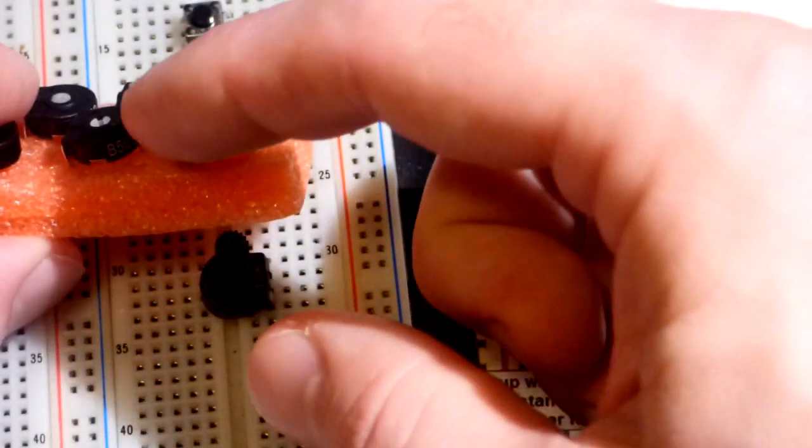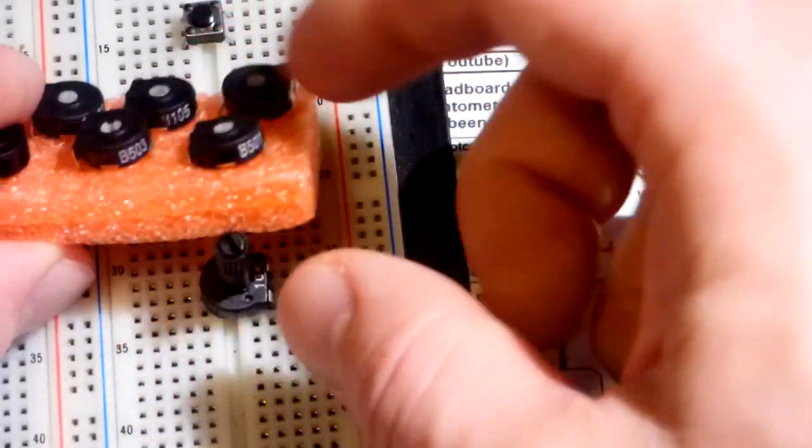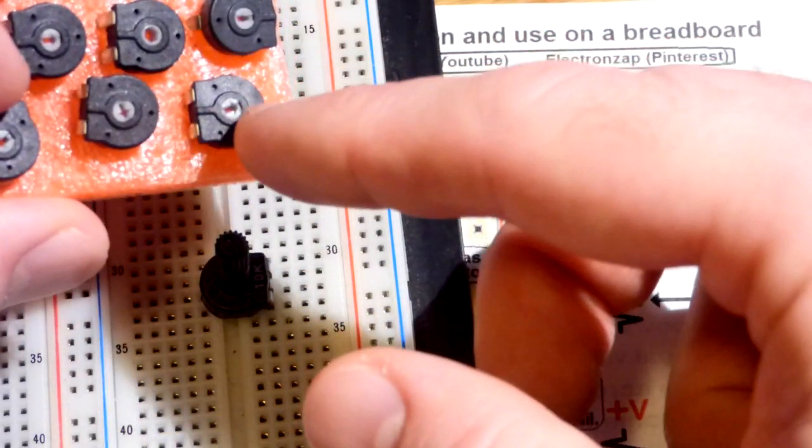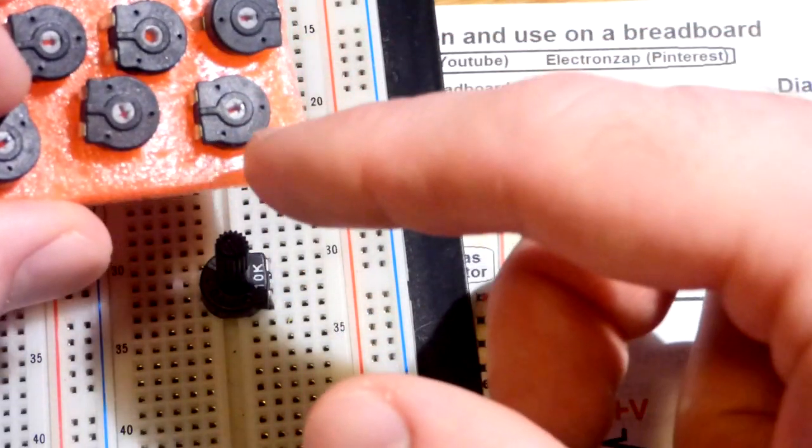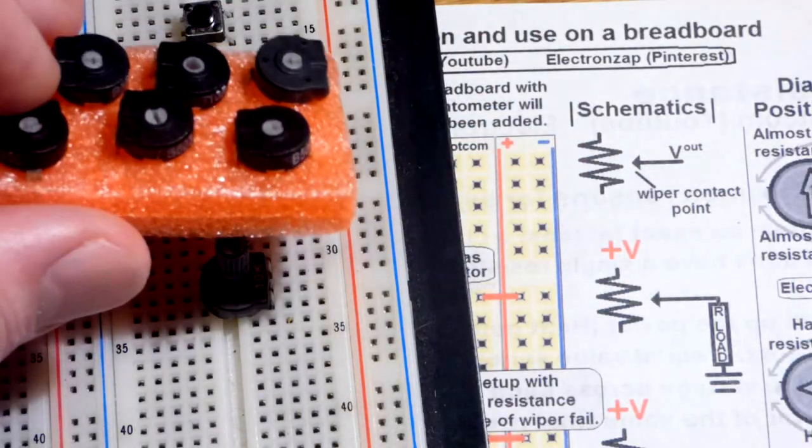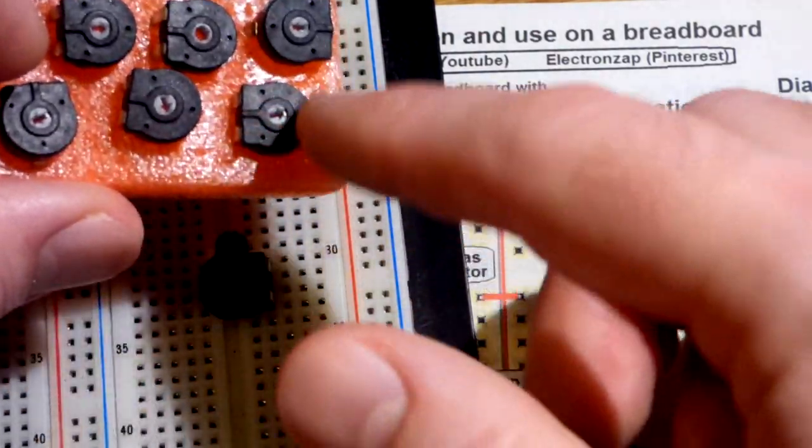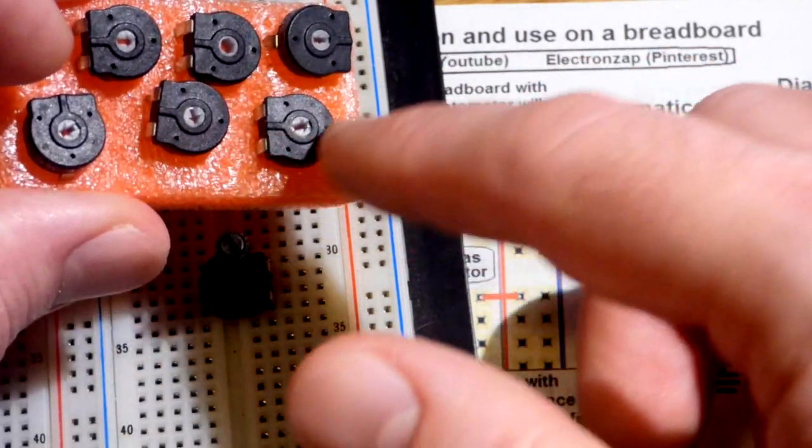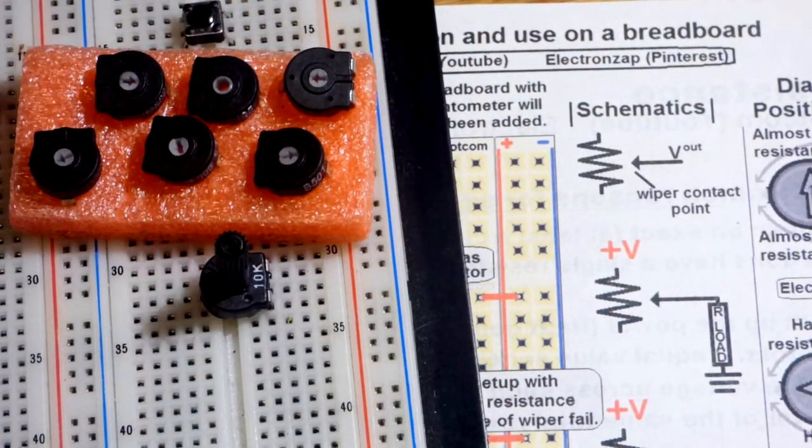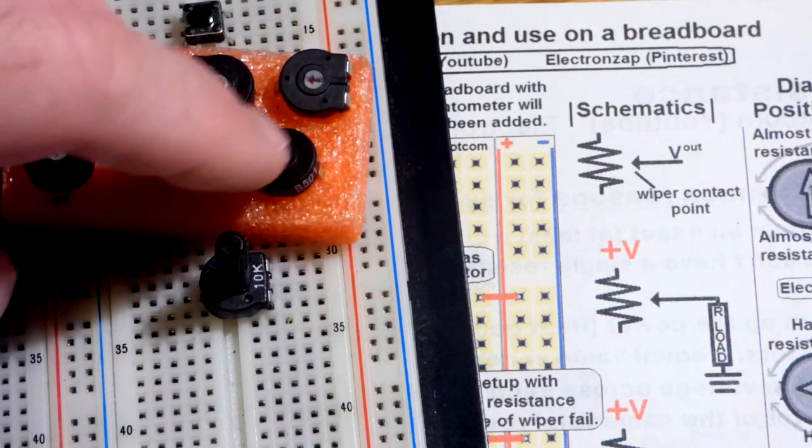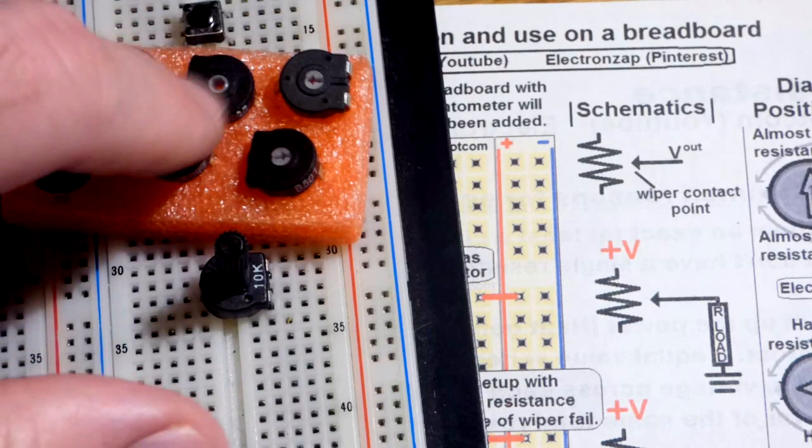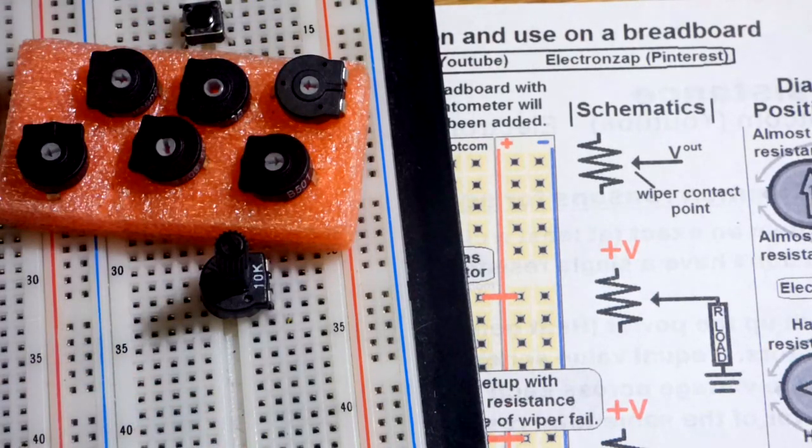That means the resistive element in there is consistent across there. So if you go a certain distance, you'll have a certain percentage. If you go twice as much, you'll have twice the percentage of resistance of the total element. So the resistive element has a consistent resistance across it. There's non-linear ones where the resistance varies based on what particular part of the element you're at. But these are linear. They're consistent. All I have are linear trim pots.